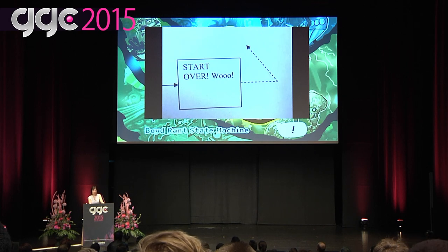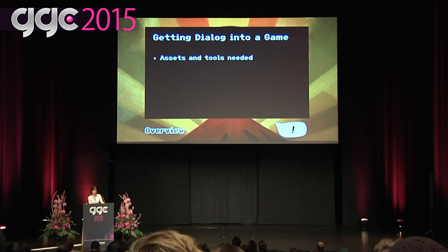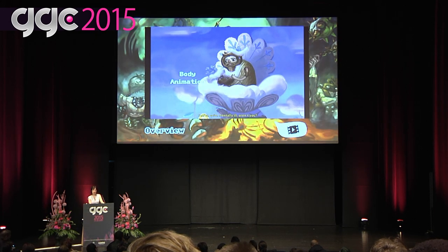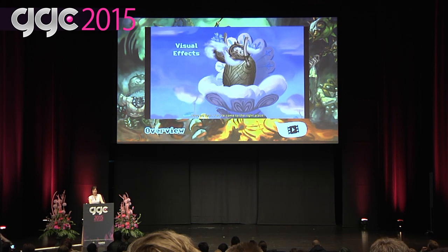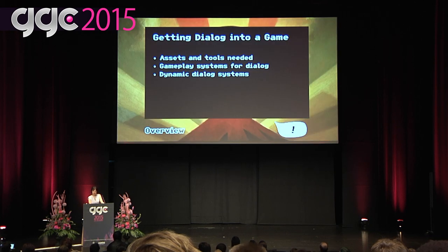What I'd like to tell you about today is the dialogue systems we use to create someone like Boyd. More generally, I hope to give you a pretty good idea of what it takes to get dialogue into a game: what kind of assets and tools you may need, how to approach writing gameplay systems for dialogue — including playing the correct text, sound file, body, face, and lip sync animations — how to approach dynamic responses and conversations, and what you need to do to support another language.